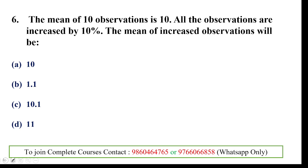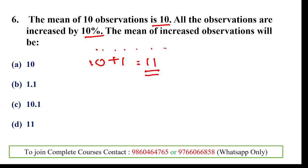Next: the mean of 10 observations is 10. All observations are increased by 10%. The mean of the new observations will be — since every observation increases by 10%, the mean also increases by 10%. So the new mean = 10 + 10% of 10 = 10 + 1 = 11.